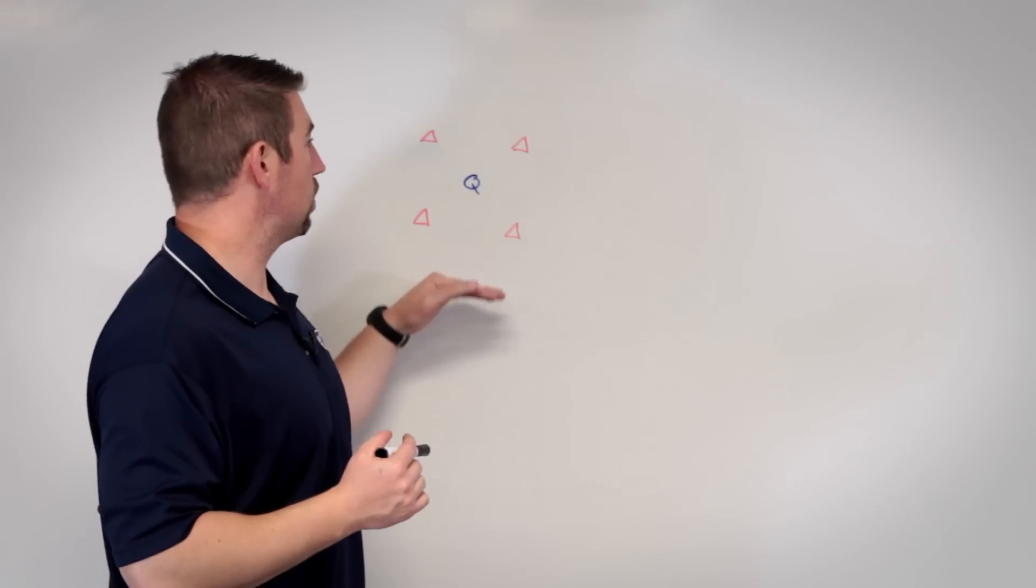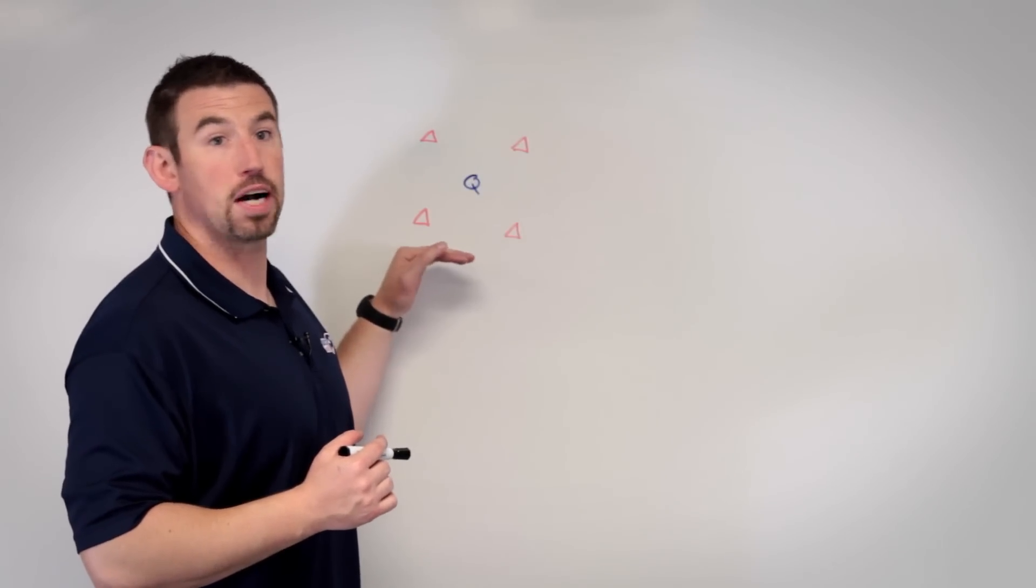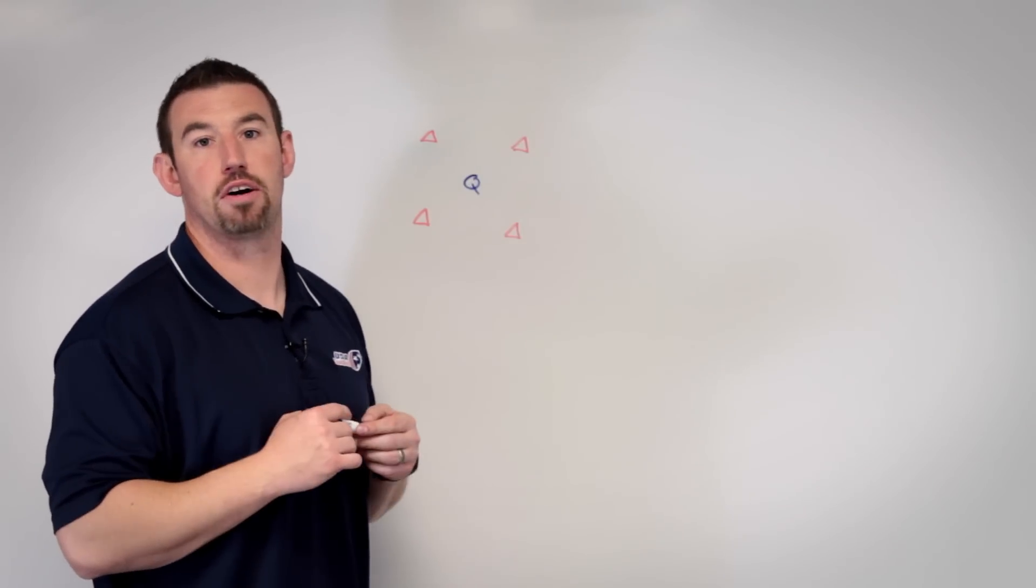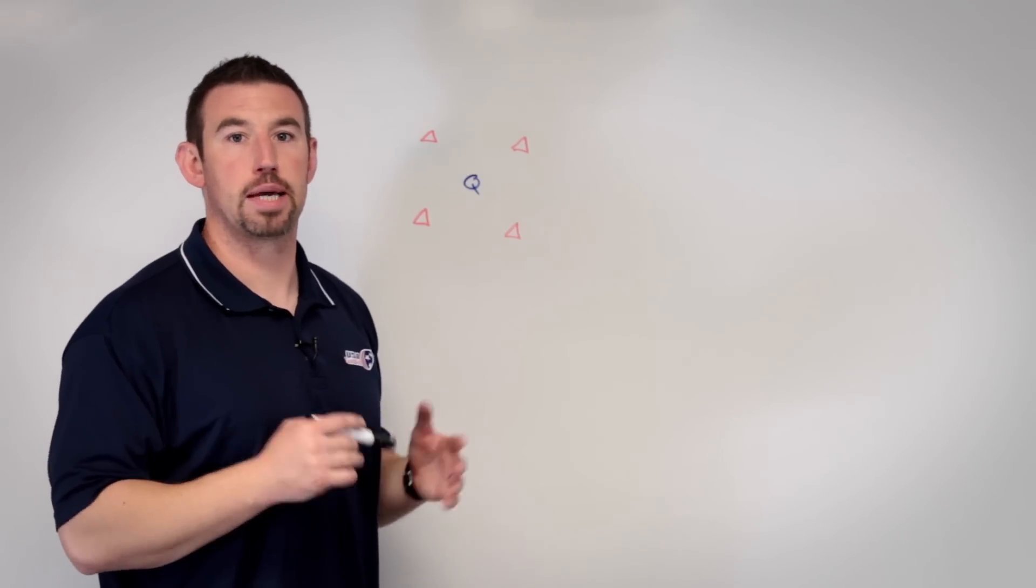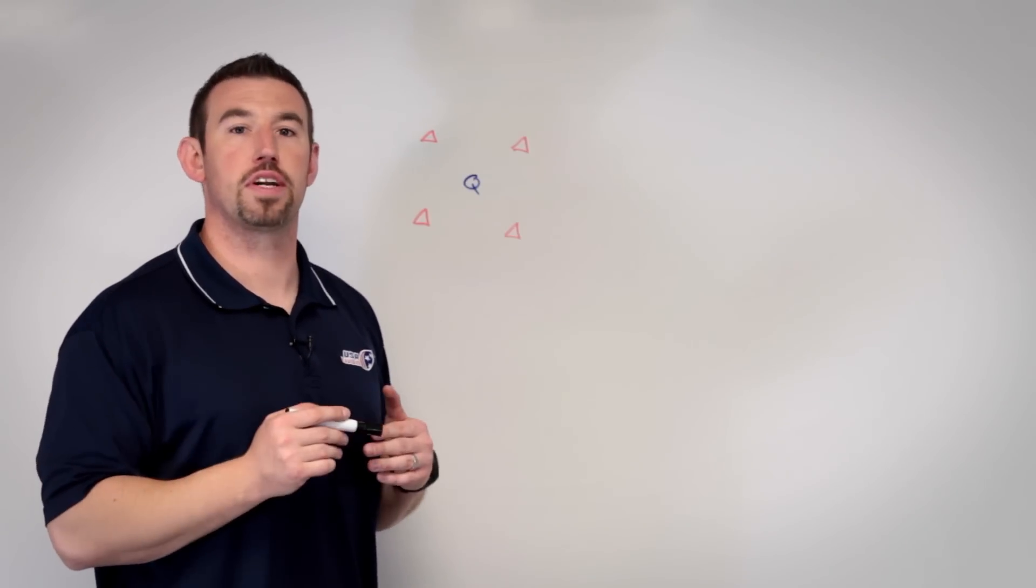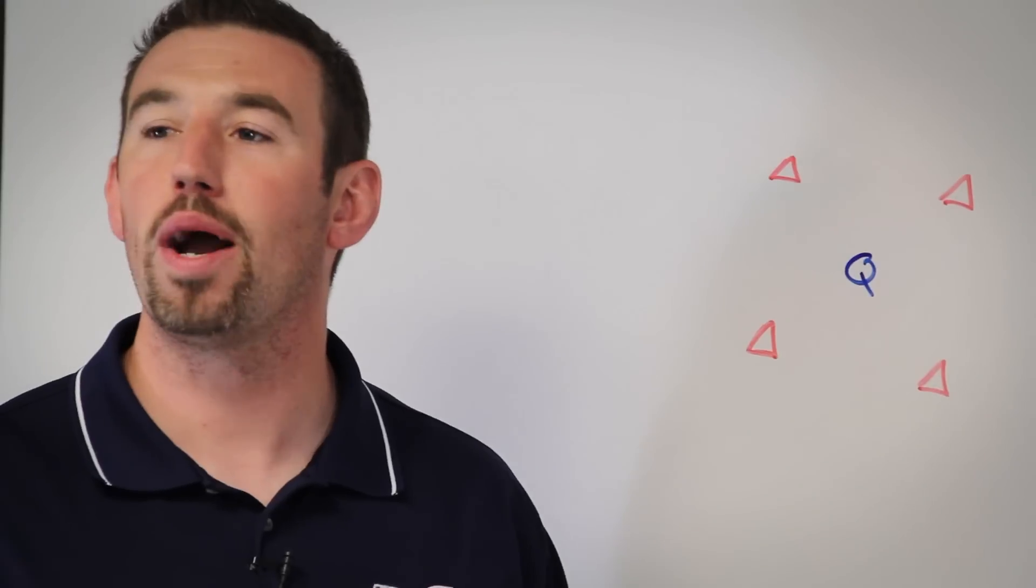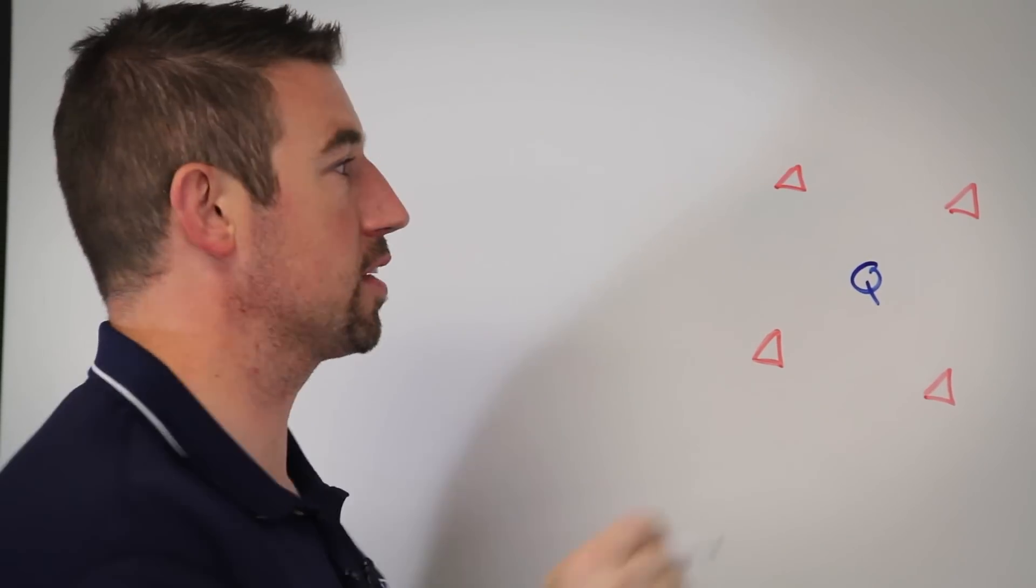To set up the drill, we'll have a box made up of four cones five yards apart. In the middle of the box, we'll place a quarterback. This could be the quarterback for your team, an assistant coach, or anyone who's going to help you with your catching. Our wide receiver will start on one corner of the box.